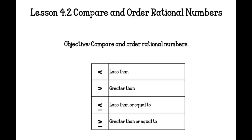Okay, lesson 4.2, we're going to be comparing and ordering rational numbers. The objective is to compare and order rational numbers, so when you see a fraction or a decimal or percent, you're able to put it in order from least to greatest.